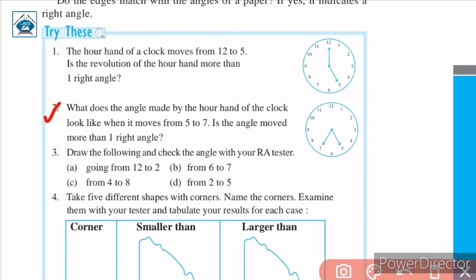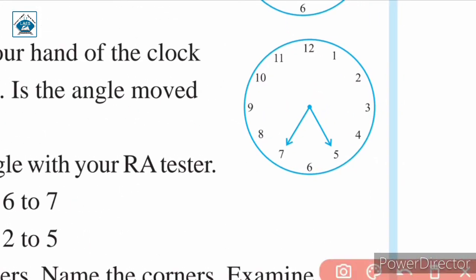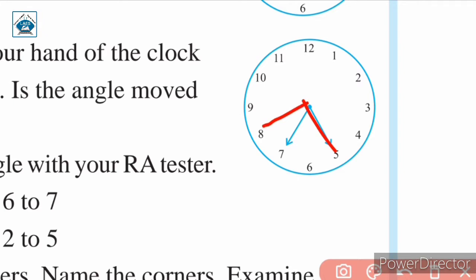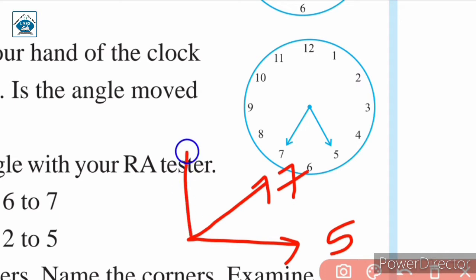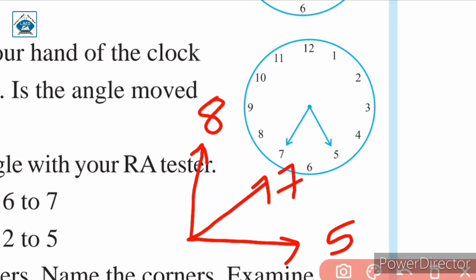In question 2, we are asked: what does the angle made by the hour hand look like when it moves from 5 to 7, and is the angle more than one right angle? The distance travelled is 2 units. If it went to 8 it would be a 90-degree right angle, but since it is 5 to 7 it is less than a right angle. So this angle from 5 to 7 is less than 90 degrees.